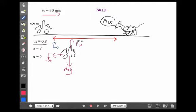If we were to sum our forces, well, in the x-direction, all we have is friction, but notice it points in the negative x-direction, so it's a negative value. And if it's the only force, it has to equal ma.